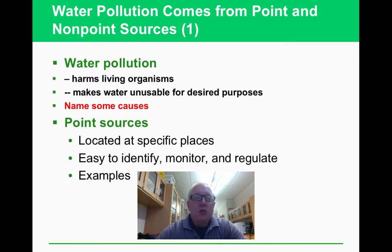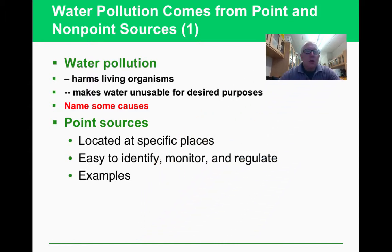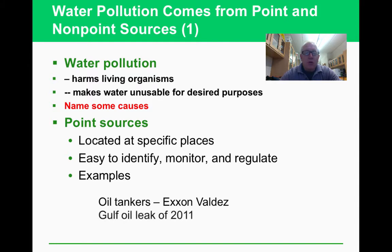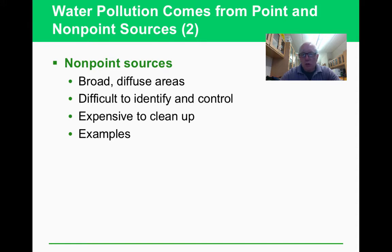Point sources are easy to identify — you know exactly where they are and you can regulate them, such as an industrial discharge pipe. The Exxon Valdez oil spill and the 2011 BP Deepwater Horizon leak are examples of point sources — you could see exactly where the oil was coming from.